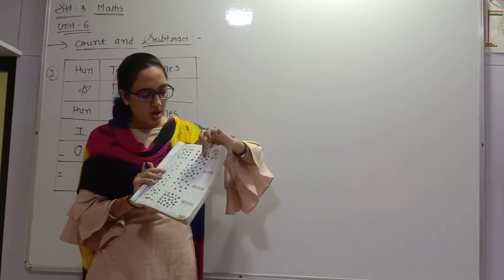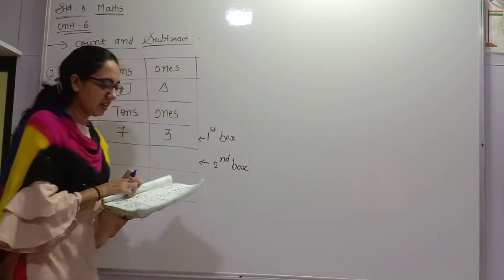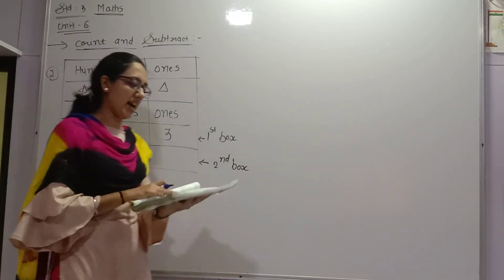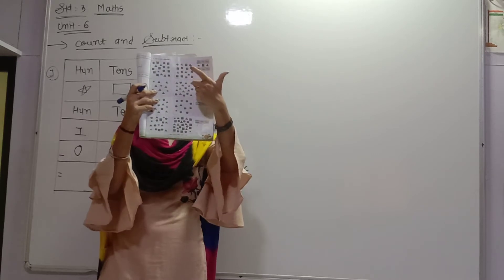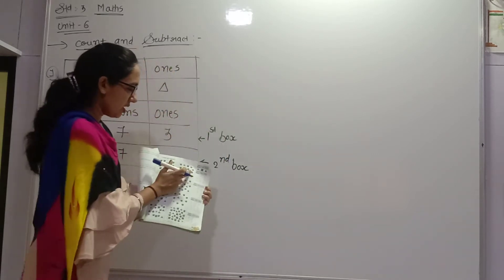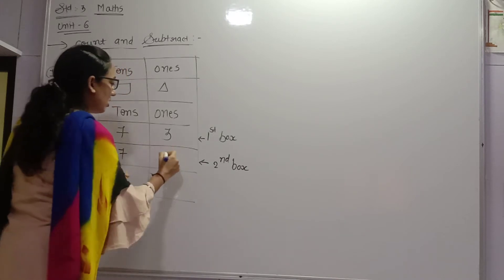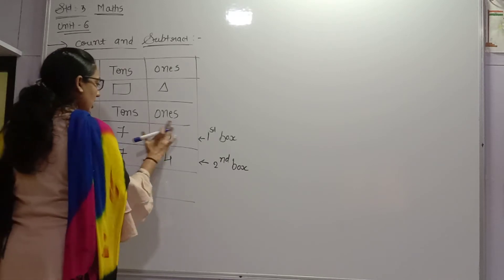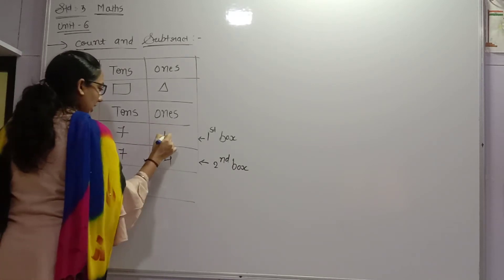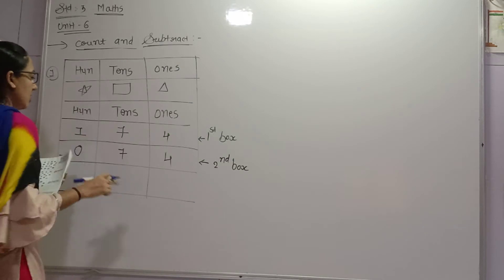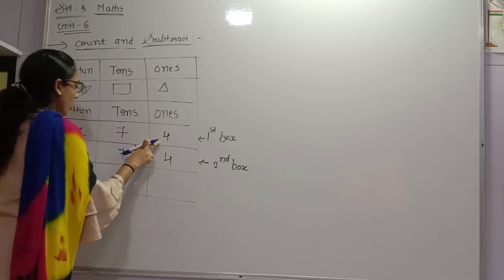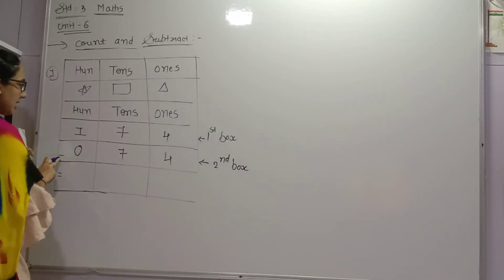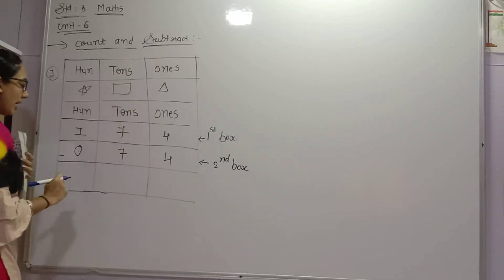Second box: firstly star. There is no star, so we put 0. Tens given here is square. The square, how many? So we have in the box 1, 2, 3, 4, 5, 6, 7. And last we have a triangle. How many triangles in the second box? 1, 2, 3, 4. We have 4, right?